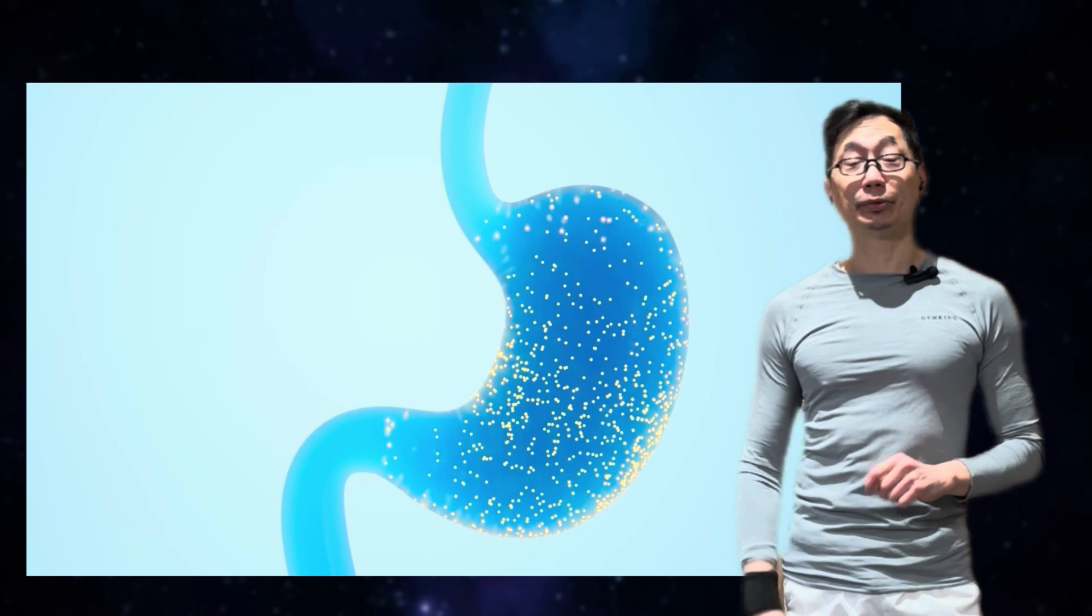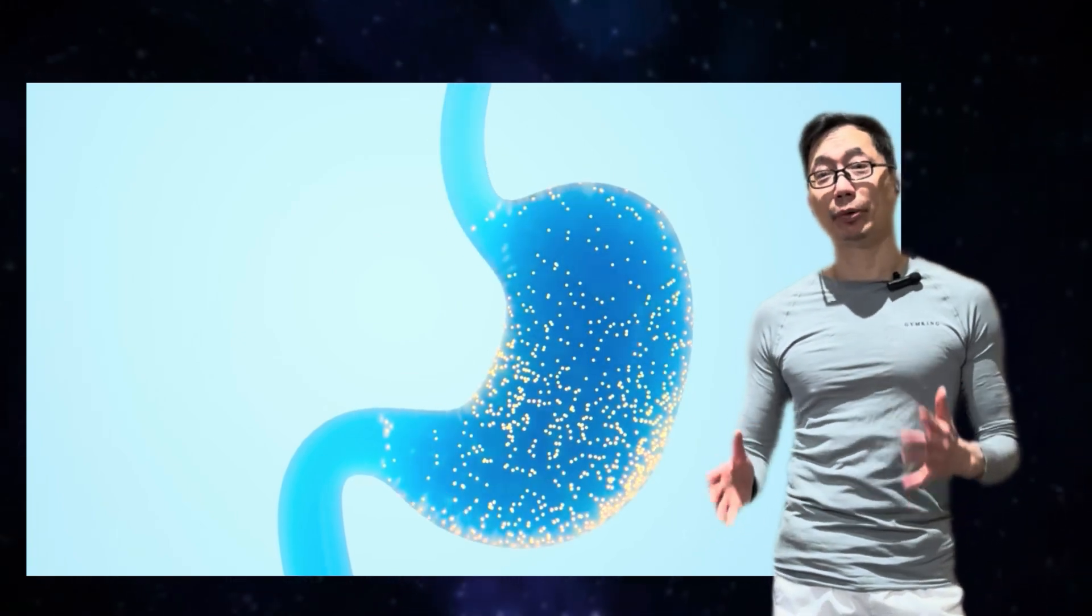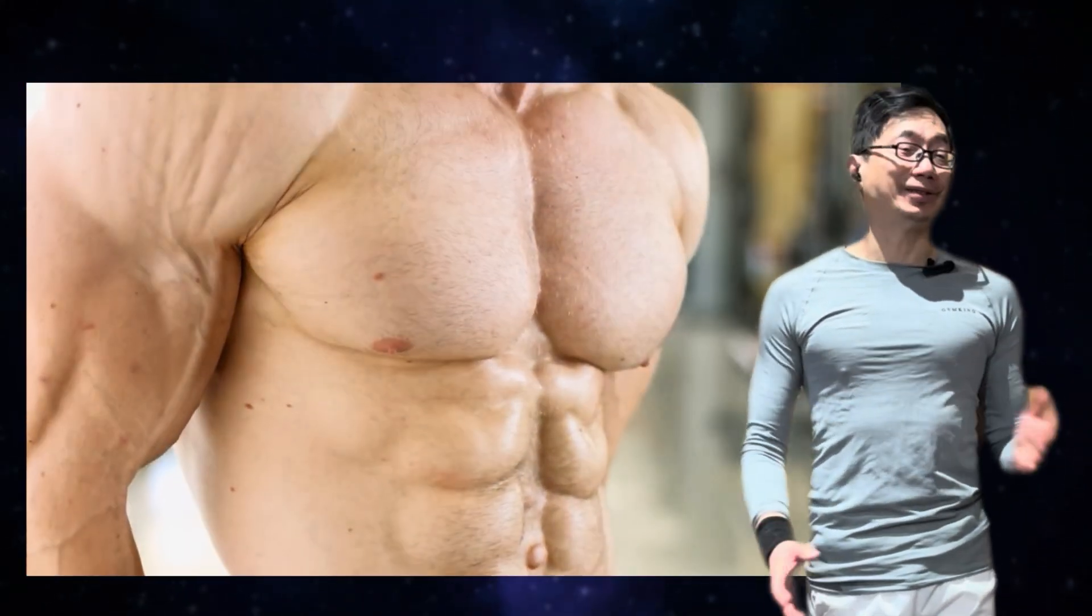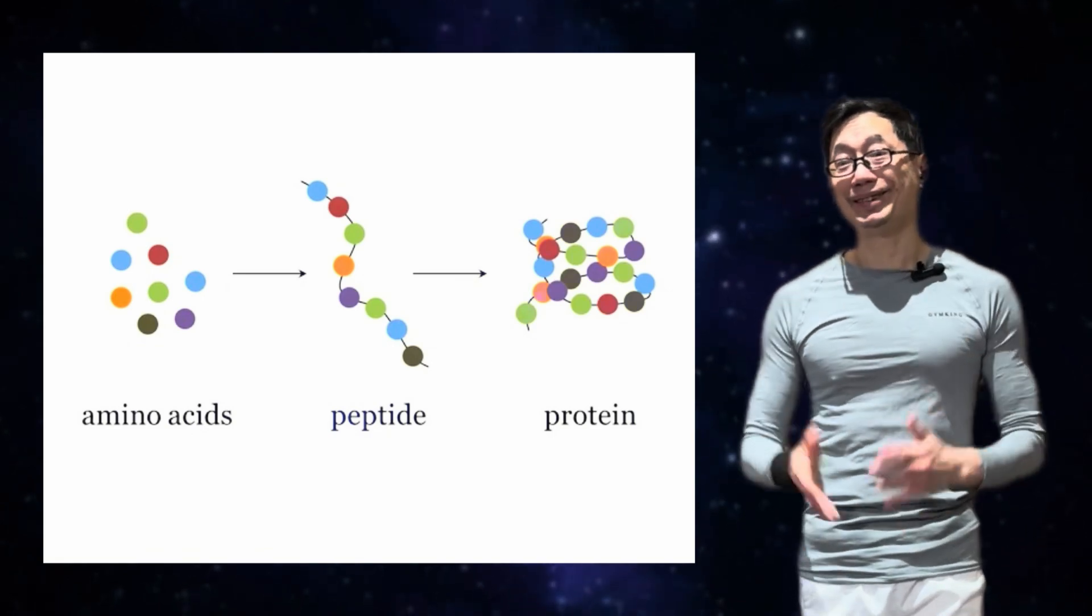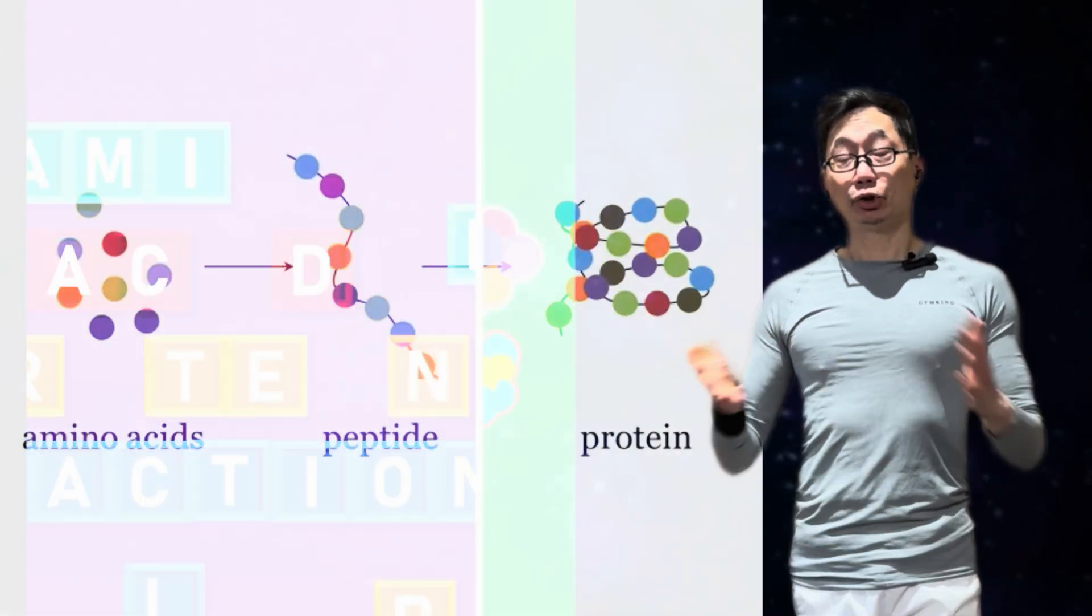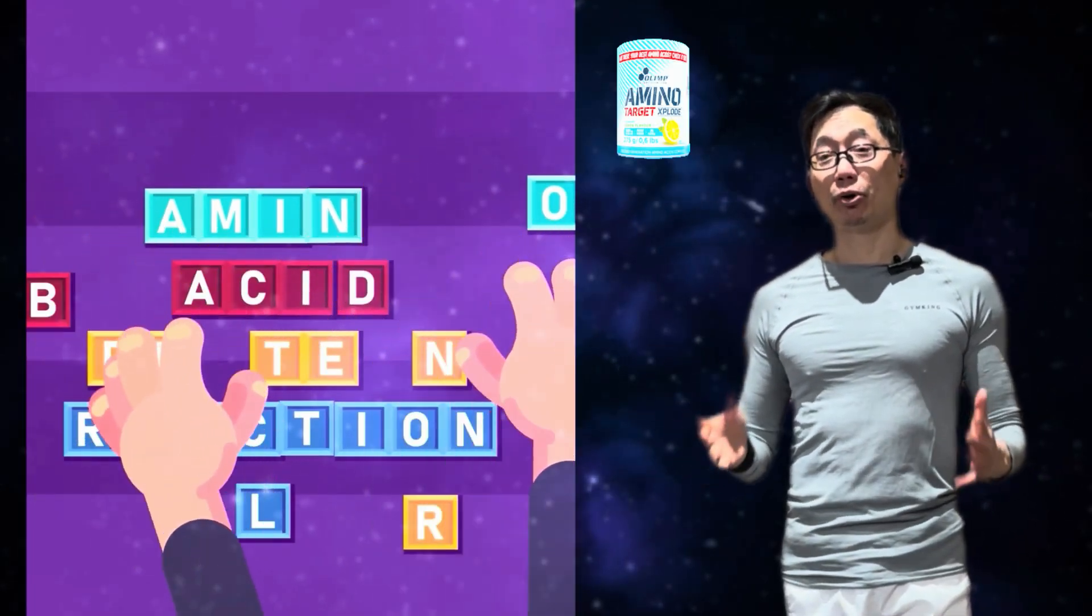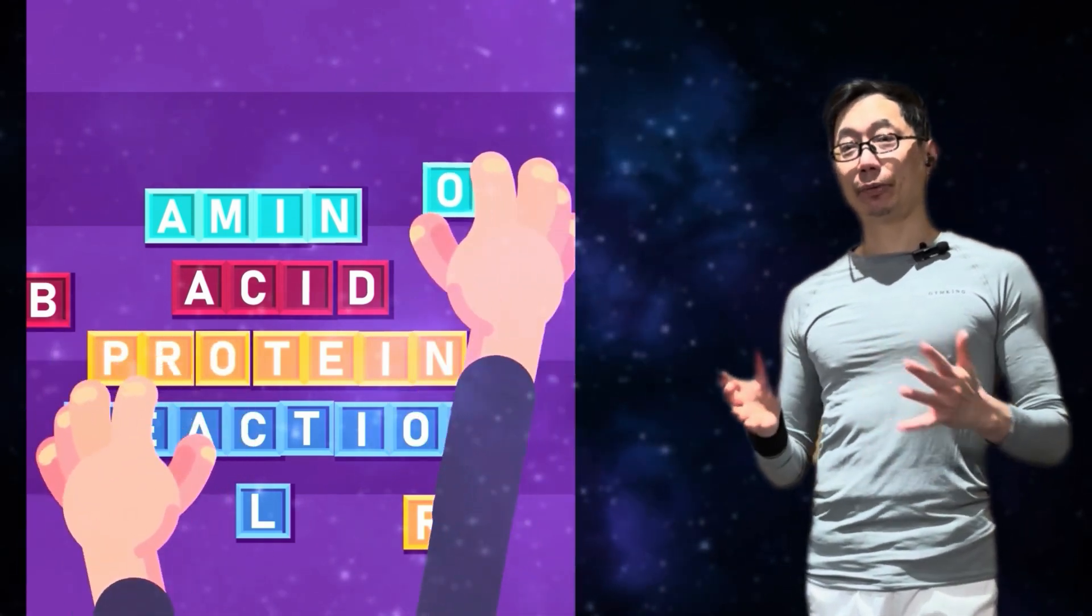So when it comes to absorption of digested protein and getting those to our muscles, we need to first understand the distinction between proteins, peptides, and amino acids. So amino acids are the building blocks, and you bond or string together some amino acids, and you create a peptide.